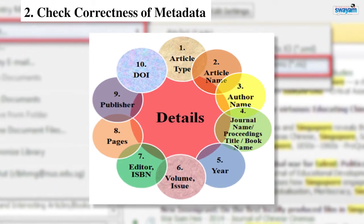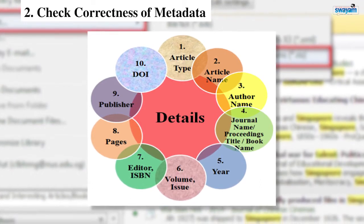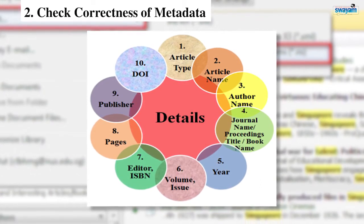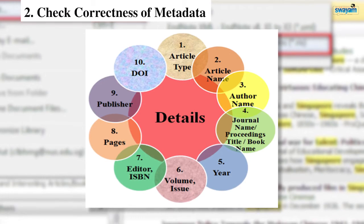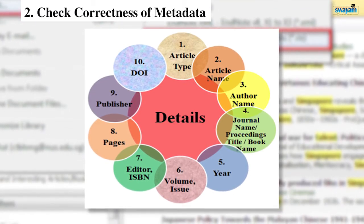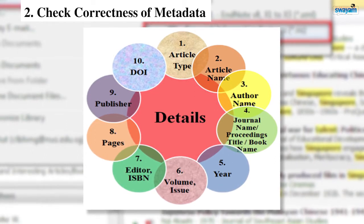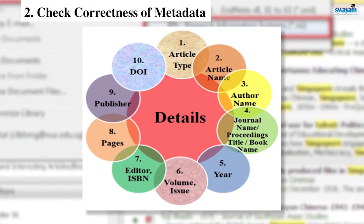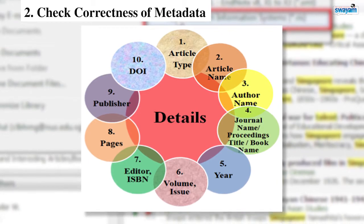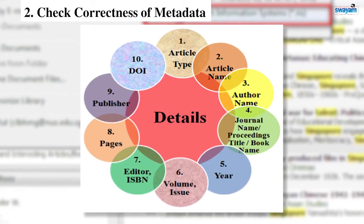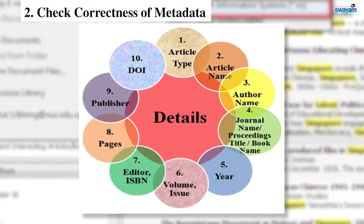Whenever an article is published in a book, a book always has an editor and an ISBN number. So ensure that the editor and the ISBN number fetched by Mendeley is correct. Also check the correctness of the page number and the publisher. Very important to mention is the DOI number — every manuscript that has been published has a unique DOI number. DOI refers to Digital Object Identifier, a unique number given by the publisher of the document.